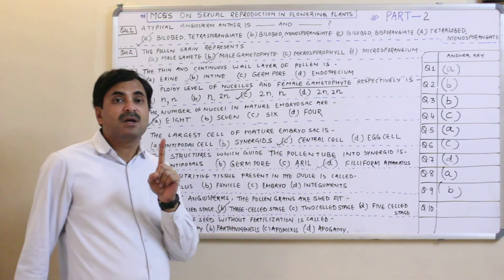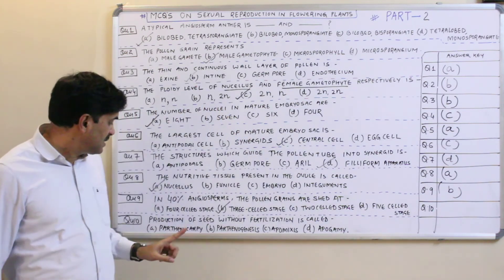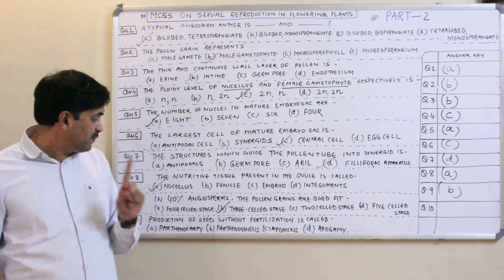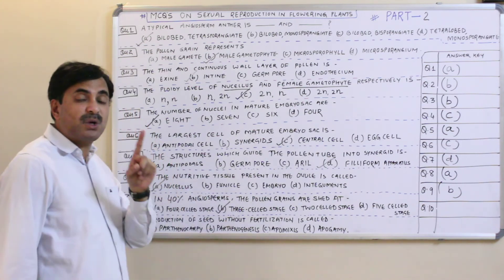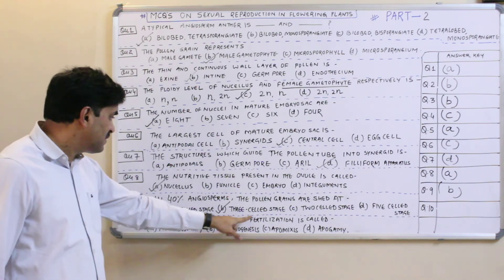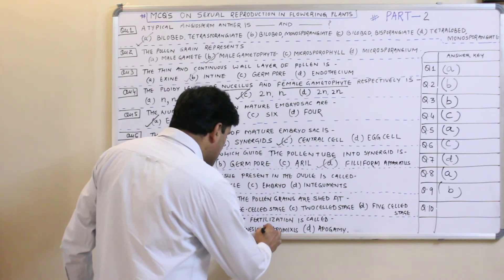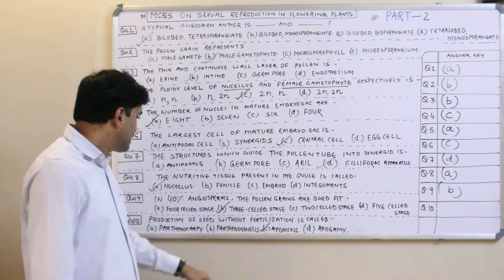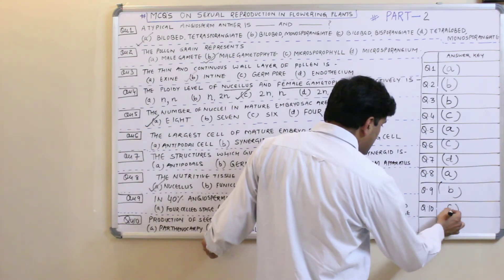The last question: production of seed without fertilization is called what? Always remember — production of fruit without fertilization is parthenocarpy, but production of seed without fertilization is apomixis. So question number ten has the answer C — apomixis.